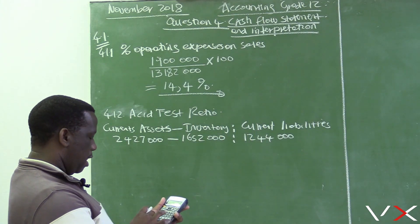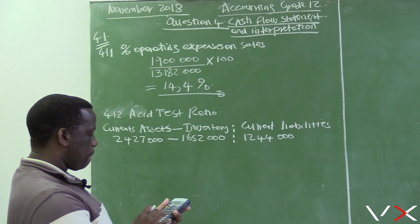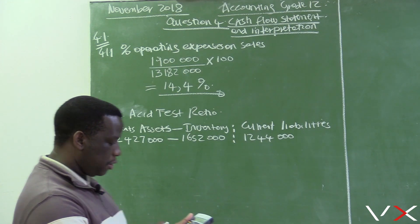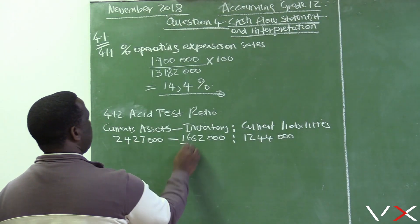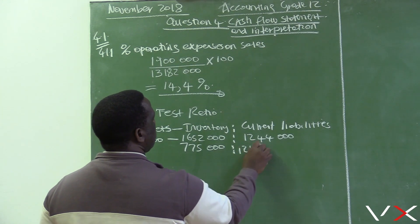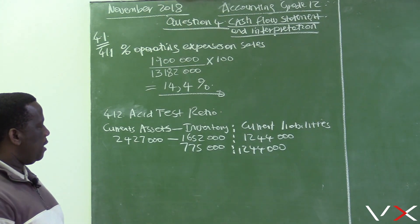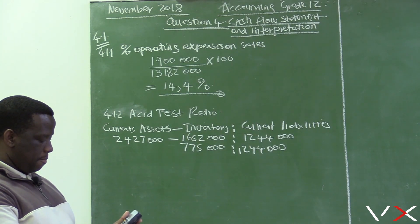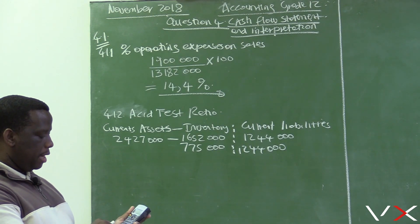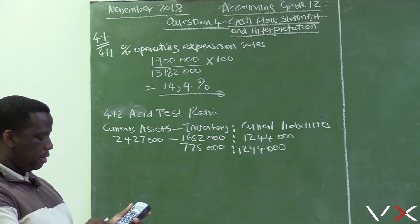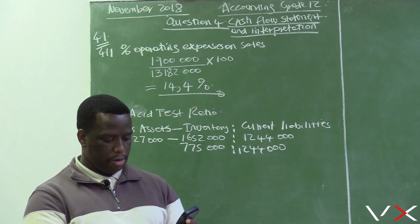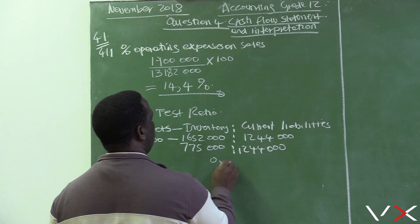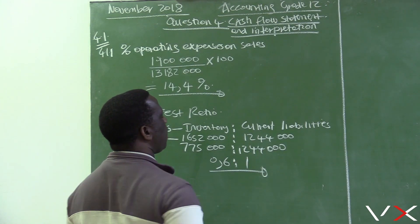2,427,000 minus 1,652,000 equals 775,000. So it is 775,000 divided by 1,244,000, which equals 0.6:1. The asset test ratio is 0.6:1.